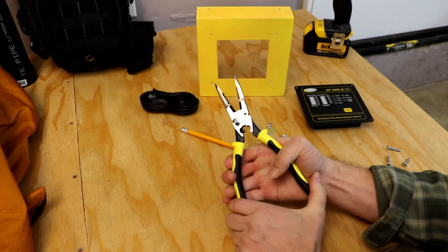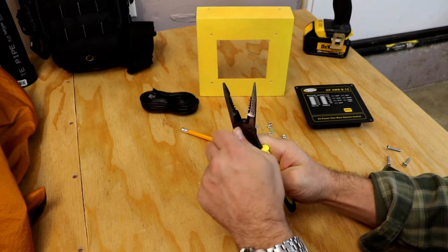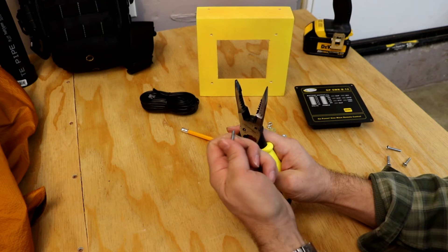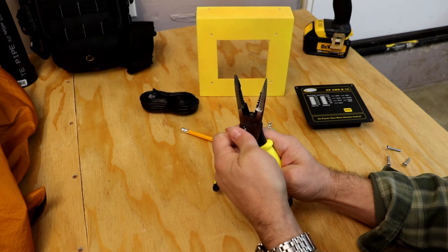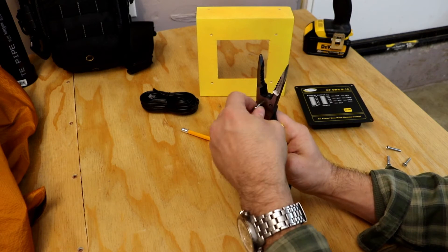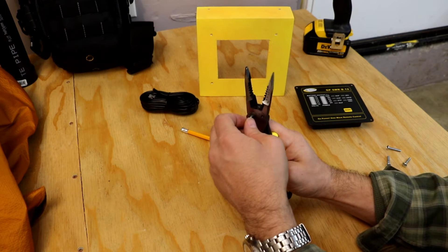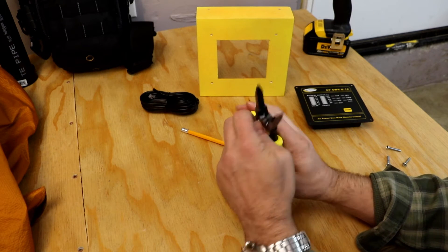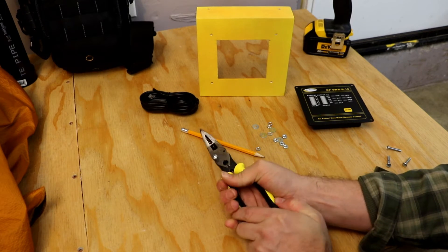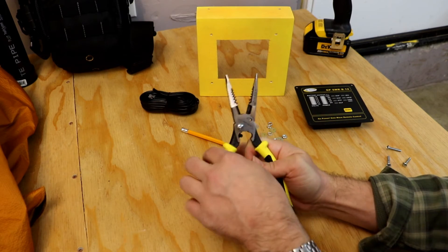And then from there, you cut it. And then what's kind of neat about it is as you back this out, it actually re-threads it. It looks like I need to actually cut a little bit more off. Probably about a little bit more than an eighth of an inch there. There we go. Got it right that time.